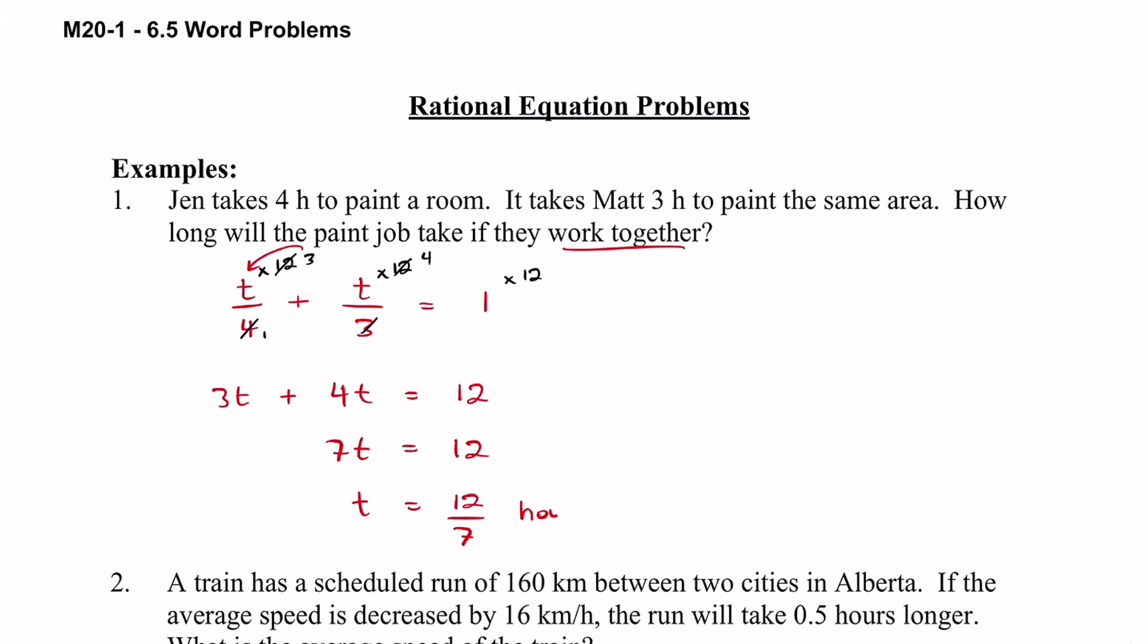Our units in this case are going to be hours because we are all dealing with hours up top. So if both of them work together it's going to take twelve over seven hours, which as a decimal that's about one point seven one hours. So close to two hours. But you can just leave it as the fraction twelve over seven.